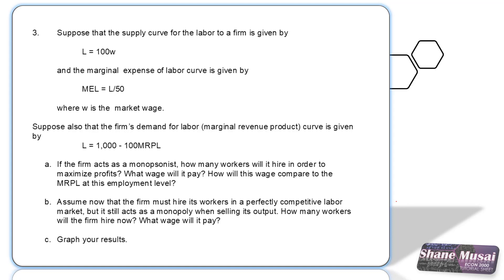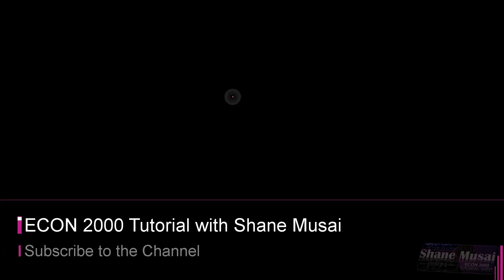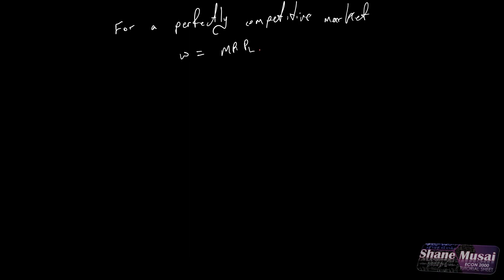Part B of the question says: assume now that the firm must hire its workers in a perfectly competitive labor market, but it still acts as a monopoly when selling its output. How many workers will the firm hire, and what wage would it pay? In a perfectly competitive market, the wage equals the MRPL. We can calculate this from the supply curve. The supply curve gives us L equals 100W, therefore the wage equals L over 100.